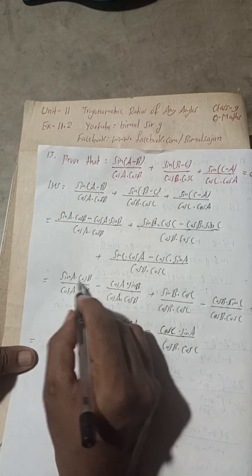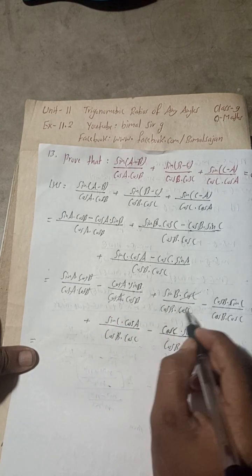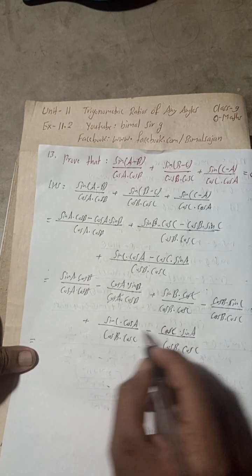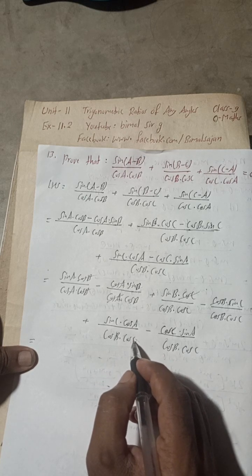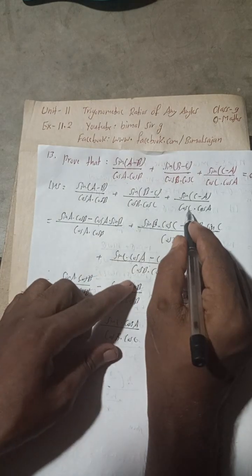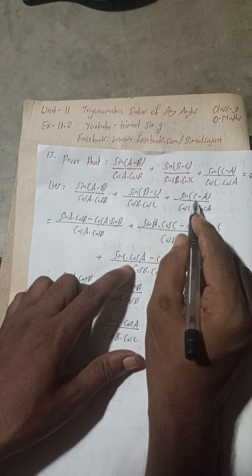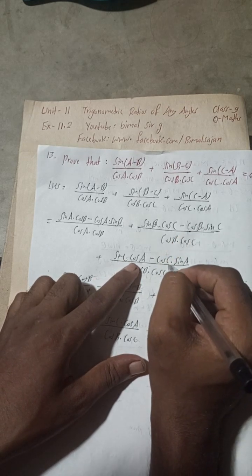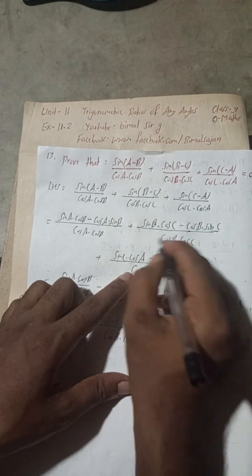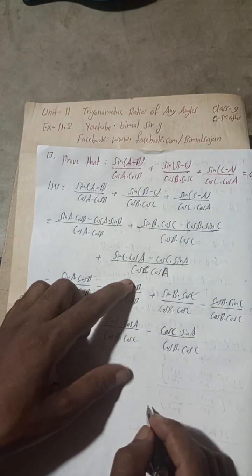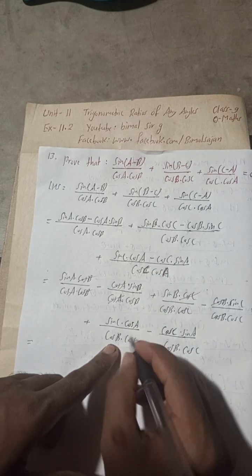After cancellation: in the first term cos B · cos B cancels, in the second term cos A · cos A cancels, in the third term cos C · cos C cancels. Wait, there is a mistake here. I need to correct this part — the third term should be sin C · cos A minus cos C · sin A, divided by cos C · cos A.